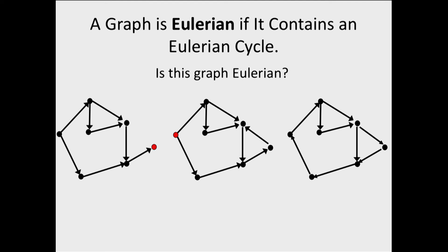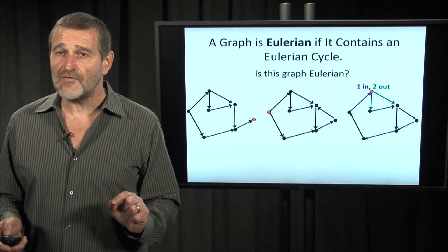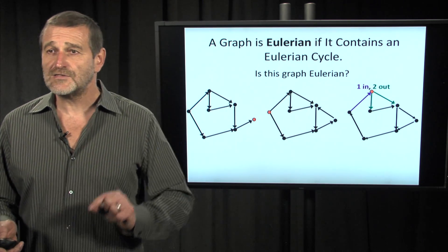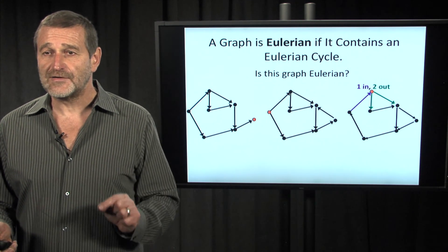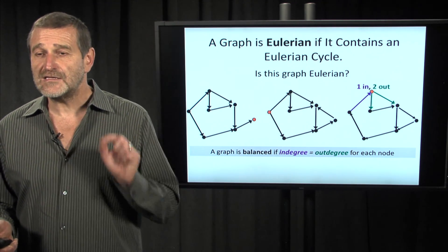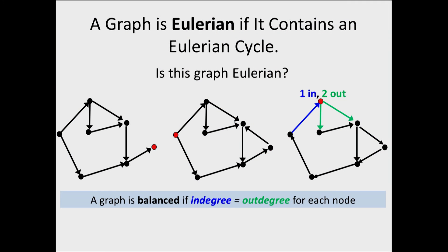And what about this graph? We need to look a little closer, but we will immediately find a red node here for which there is one incoming and two outgoing edges. This means that this graph cannot possibly be Eulerian, because in every Eulerian cycle, the number of times we enter a node equals the number of times we leave the node. Therefore, the number of incoming edges in every node should equal the number of outgoing edges. We call a graph balanced if the in-degree of every node equals its out-degree.